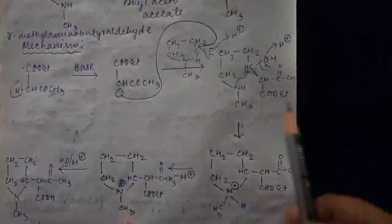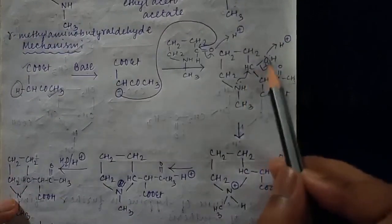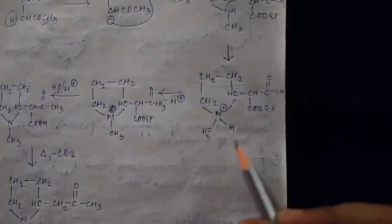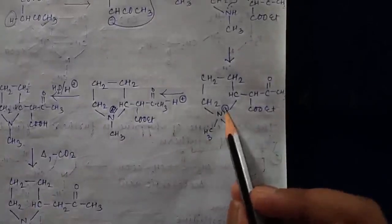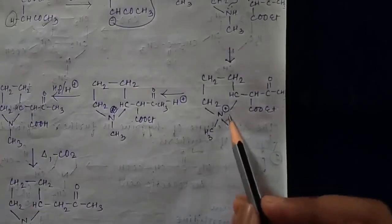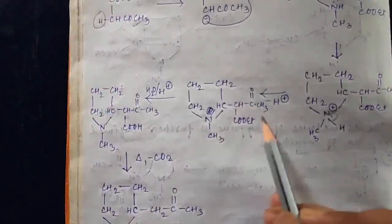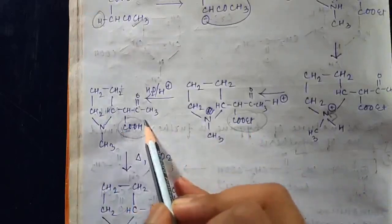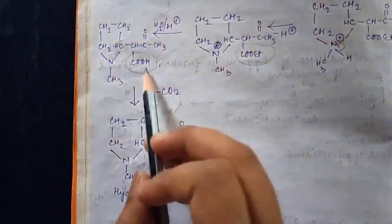The resulting structure undergoes cyclization. The nitrogen lone pair attacks, and H is removed. This structure is formed. After hydrolysis, the COOET part converts into COOH.